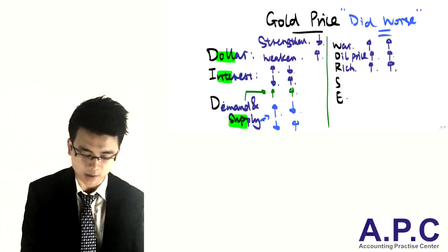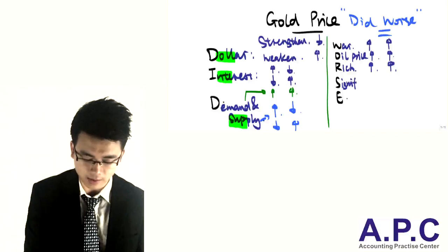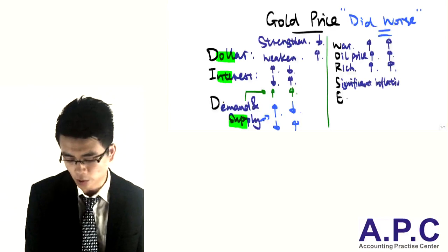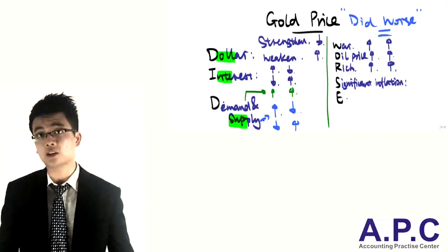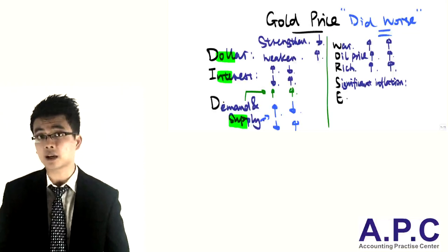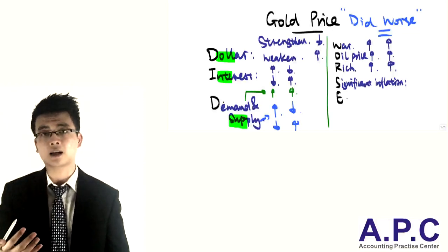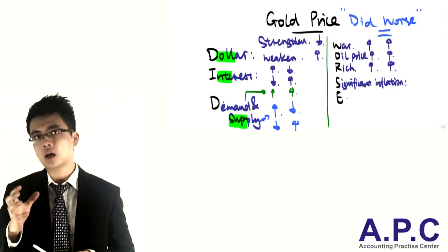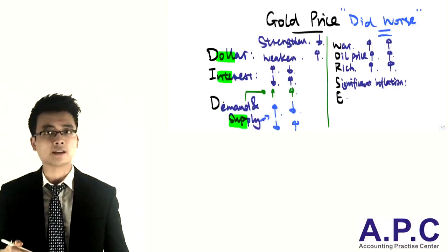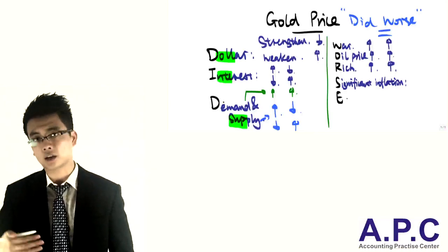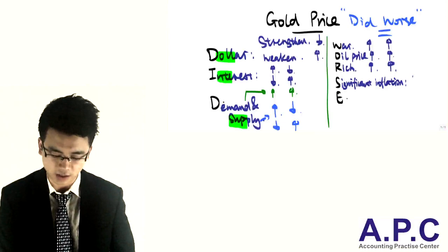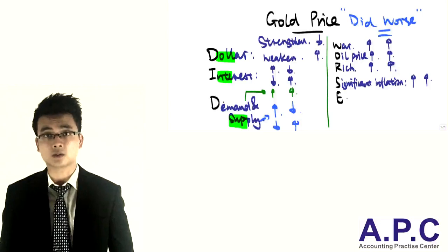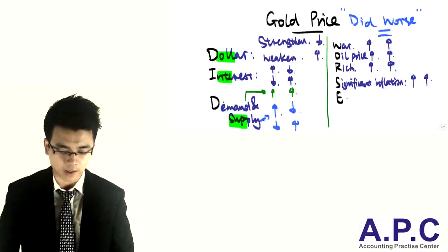The S stands for significant inflation. Which means if there's significant inflation, the purchasing power of the currency you hold will be very, very low. And hence, instead of holding this currency, you're going to buy gold. So if there's significant inflation, this will increase the price of gold as a result.